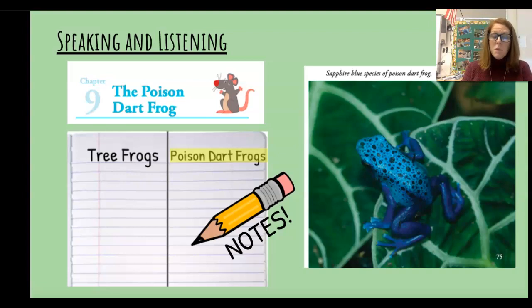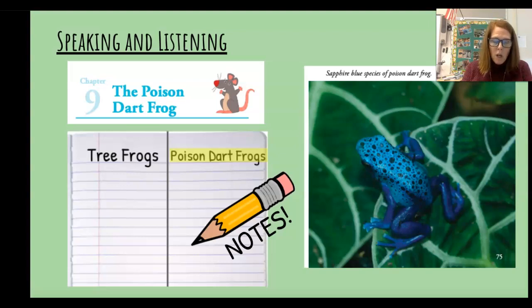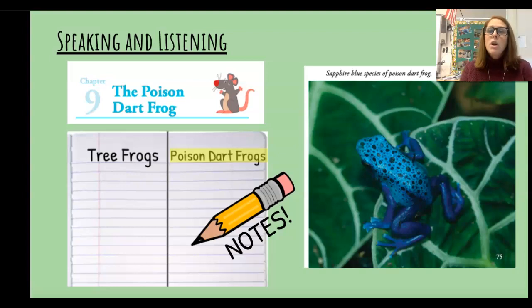The poison helps protect the frog. It tells other animals to leave the frog alone. The native people of South America collected poison from this kind of frog. They dipped darts into the poison, then used blow guns to fire poisoned darts at their enemies. This is why the frogs are called poison dart frogs. I never knew that.